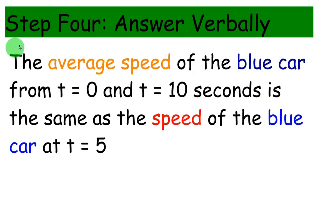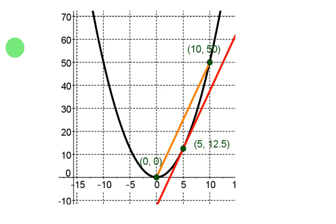So here's our answer to our question. The average speed of the blue car from t equals 0 to t equals 10 seconds is the same as its instantaneous speed at t equals 5. This is going to be kind of like a foreshadowing of a theorem we're going to learn in calculus.